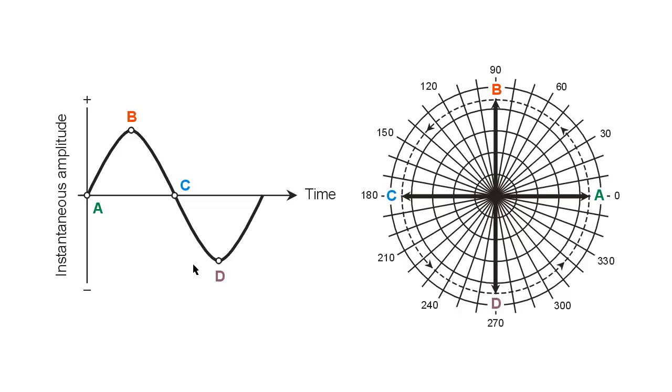As we continue and finish up the cycle, getting back once again to the zero amplitude positive going point, we can call that 360 degrees if we want to talk about the end of the cycle, or zero degrees if we want to think of this wave simply repeating itself again.